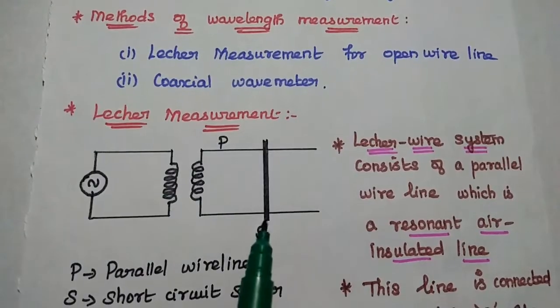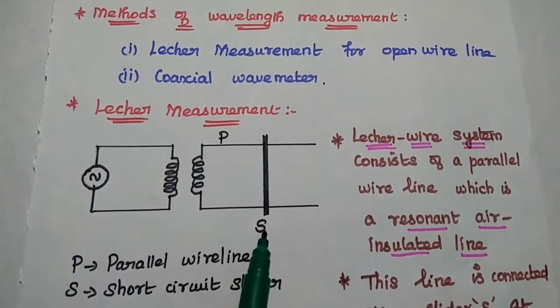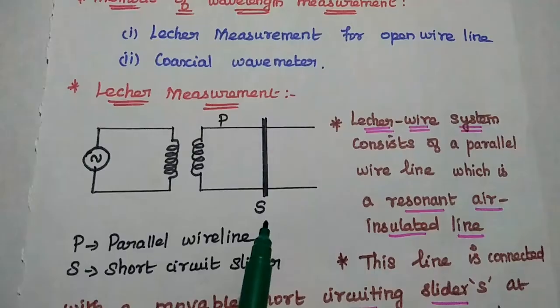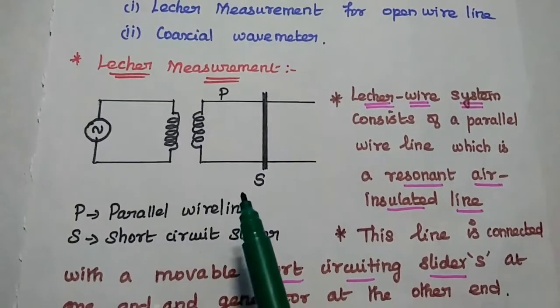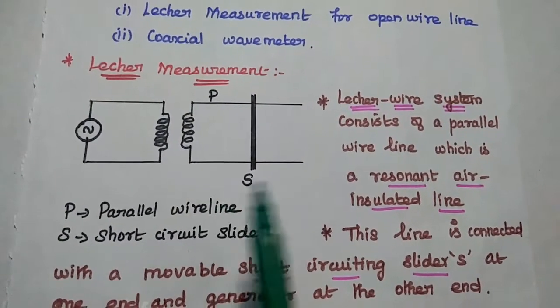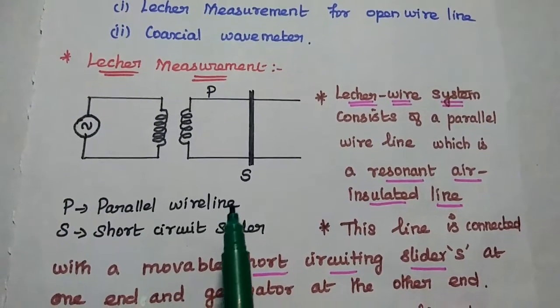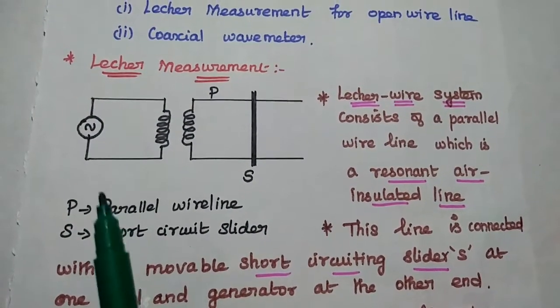There is one short-circuited slider. This S represents the short-circuited slider. Here, the line is connected with short-circuiting slider at one end and the generator at the other end.